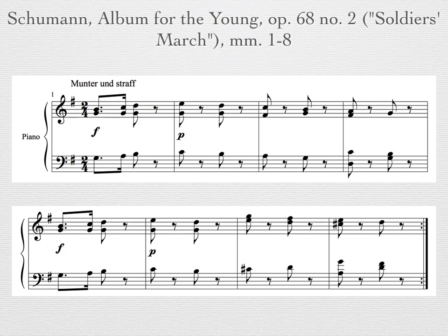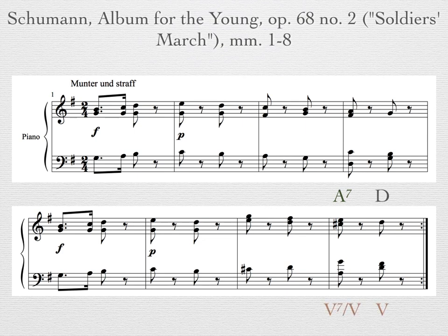Listen once more to the Schumann and hear how the A dominant 7th chord makes the D major chord at the end of the second phrase feel like a temporary tonic. Since we aren't actually changing to the key of D major, we use a convention of notating with a slash that indicates that the A dominant 7th is V7 of V in the key of G major.